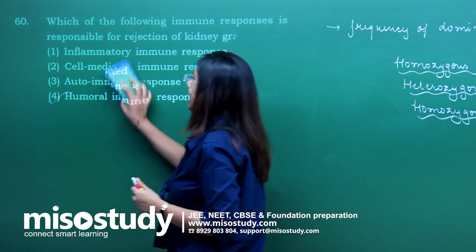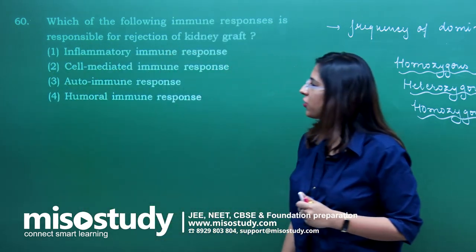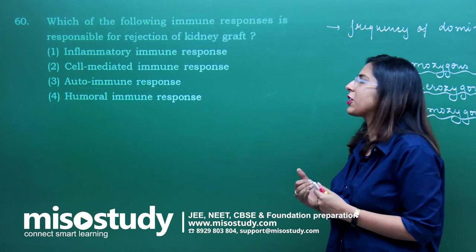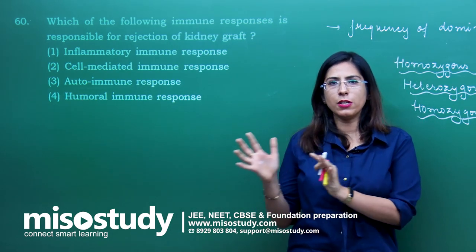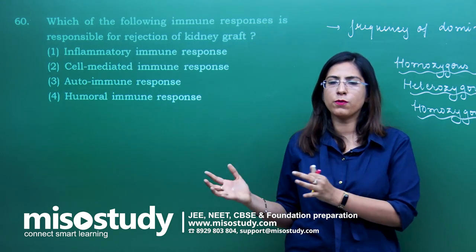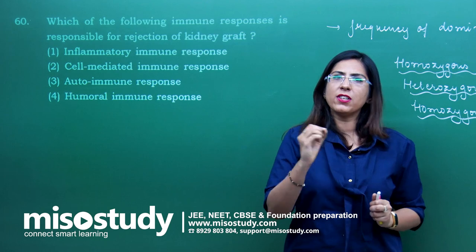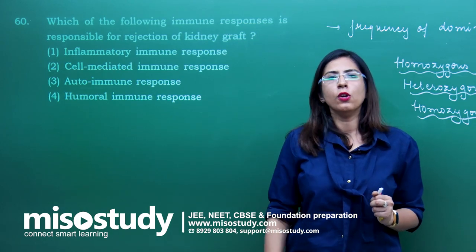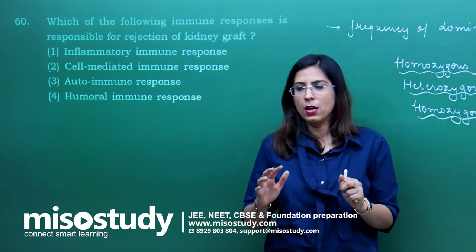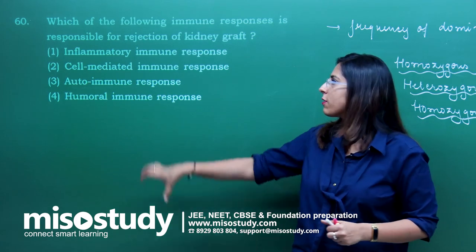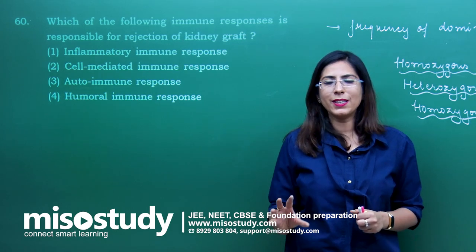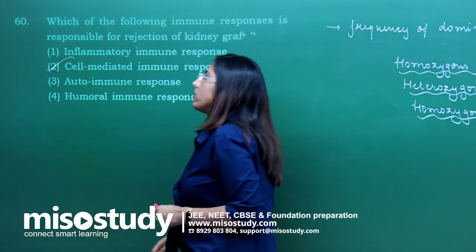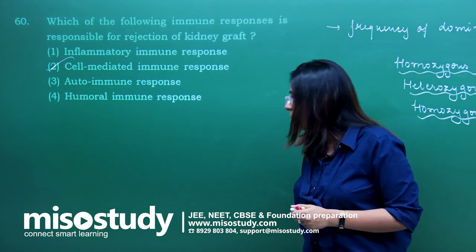Question number 60 — from the chapter human health and diseases. Which of the following immune response is responsible for rejection of a kidney graft? Suppose one has gone through kidney transplantation — if rejection occurs, the main immune response responsible is cell-mediated immune response. Though humoral immune response is also somewhat responsible for graft rejection, primarily it is because of cell-mediated immunity where T cells kill the graft. The correct answer is option 2.